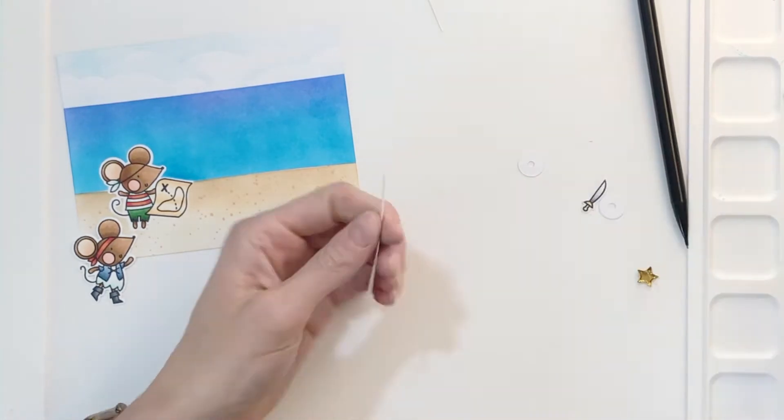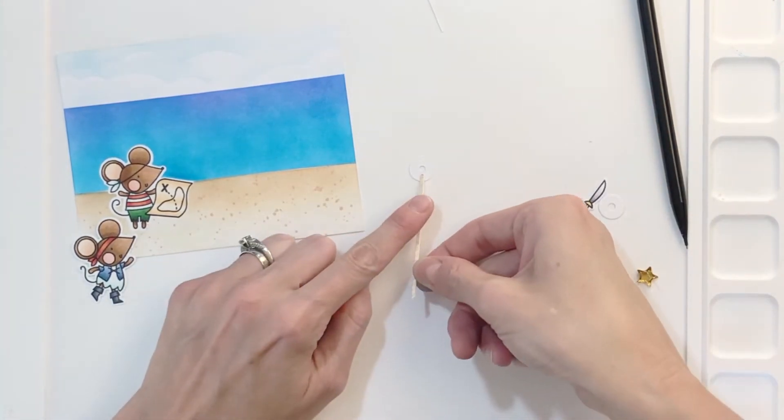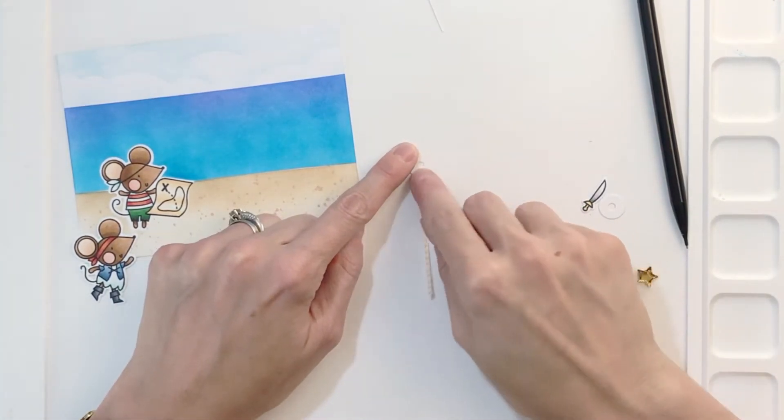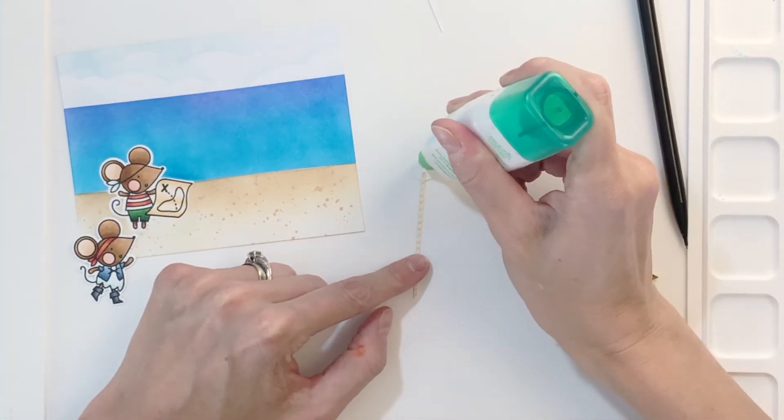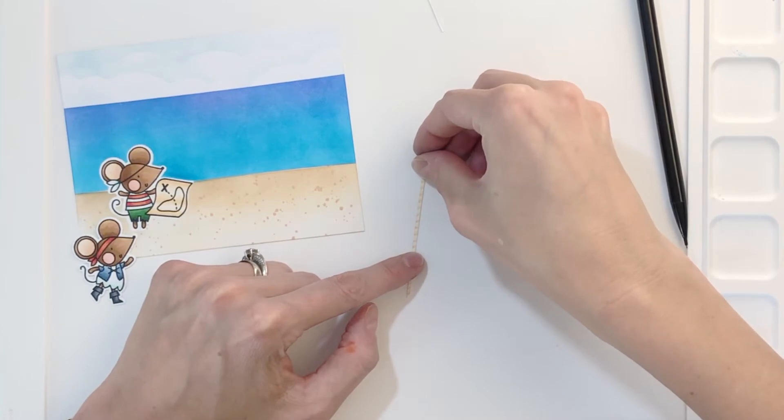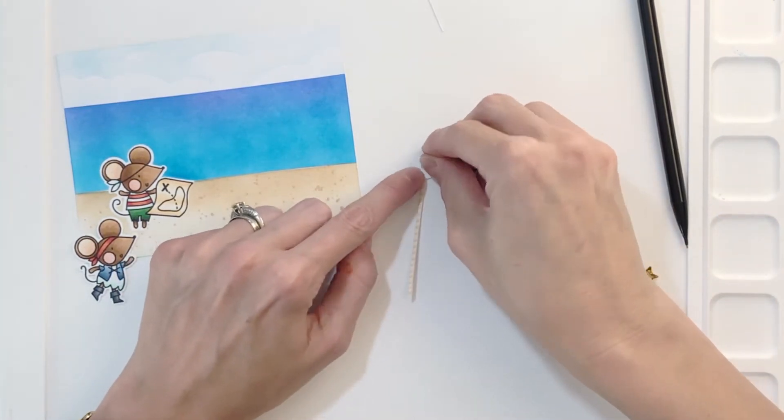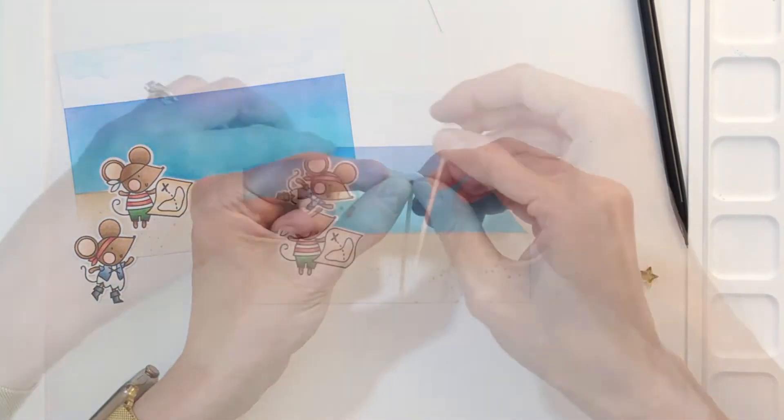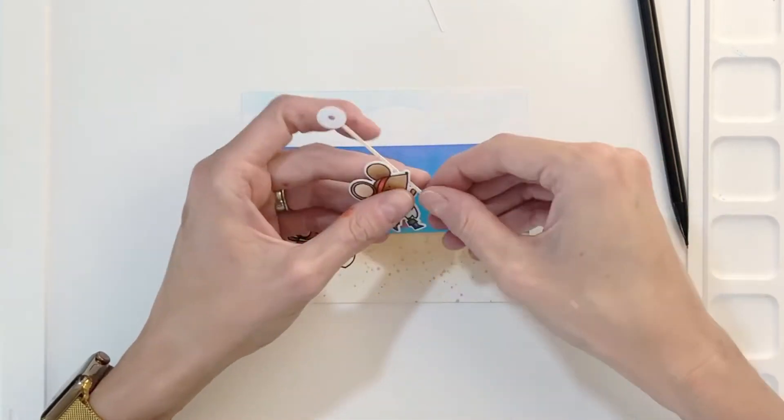I'm going to sandwich the rope between these two donut pieces. So I'm going to grab my liquid glue here, glue the very top part of the rope to one donut piece and then sandwich it with the top donut piece. You want to make sure though when you're doing this that you don't block the hole of the donut.